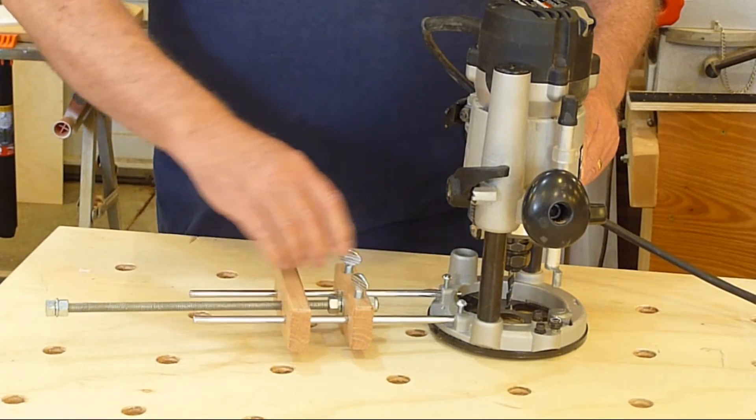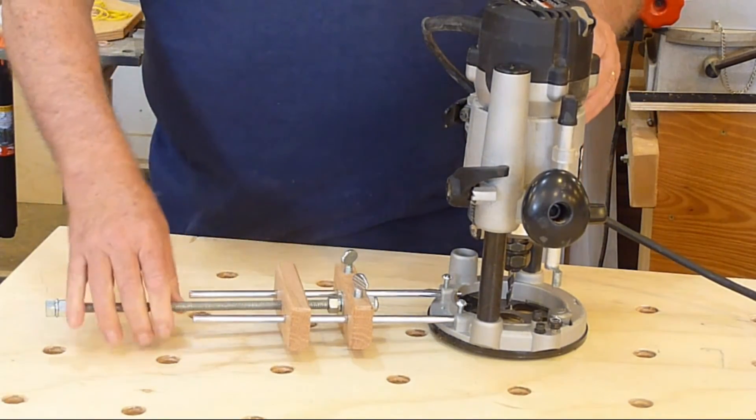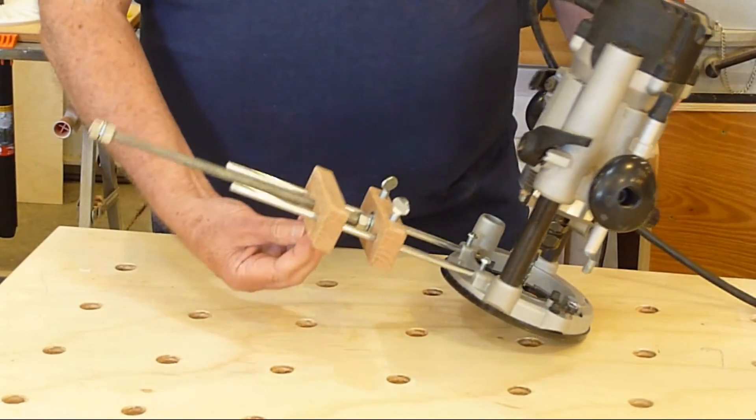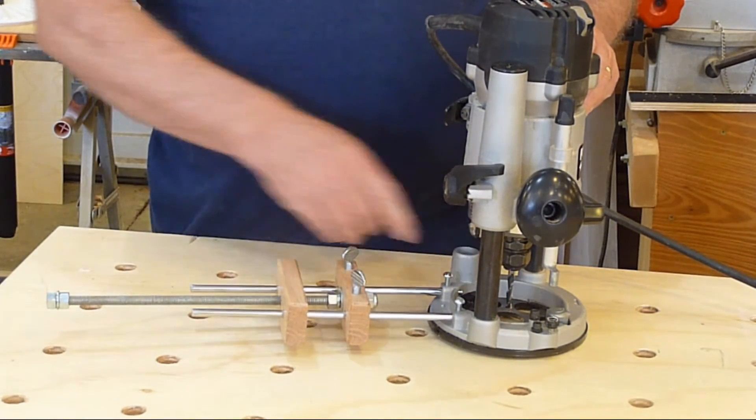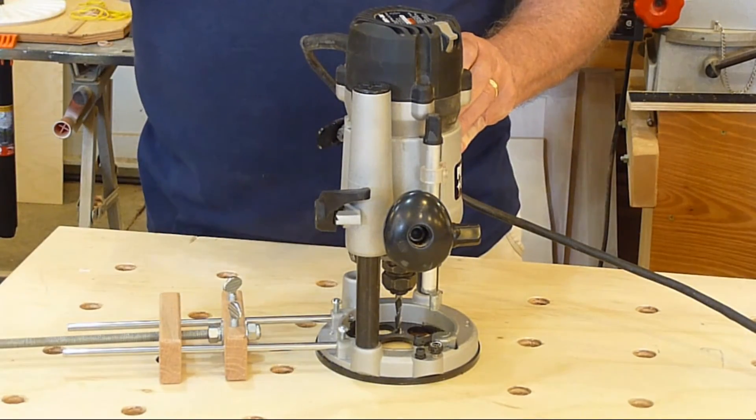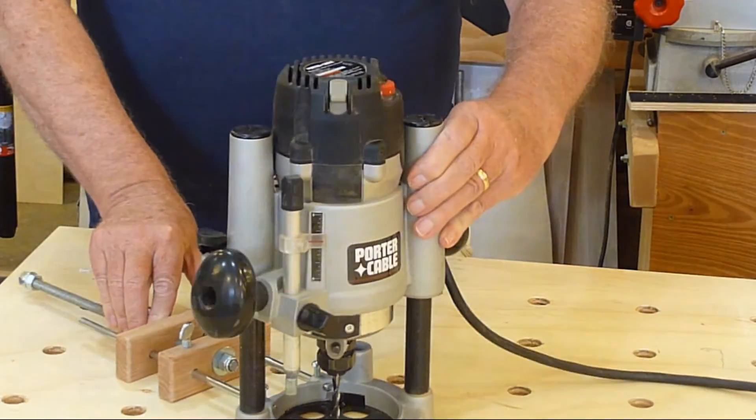That gives you the coarse adjustment on the circle cutting distance or radius. The radius of the cut will be from the pin to the router bit. If that's in a hole, I know that's too big, but you get the idea. Put that in the hole, there's your circle cutting.